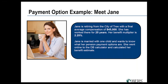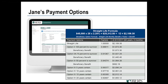To walk through an example — Jane is retiring from the fictional City of Tree with a final average compensation of $45,000 a year. She's worked there for 25 years and her benefit multiplier is 2.25%. She's married with one child. Jane used our online DB calculator to run a benefit estimate. It breaks down all of her different payment options and the monthly payments she'd receive for each one. You can use that same DB calculator to run a customized projection unique to your situation.